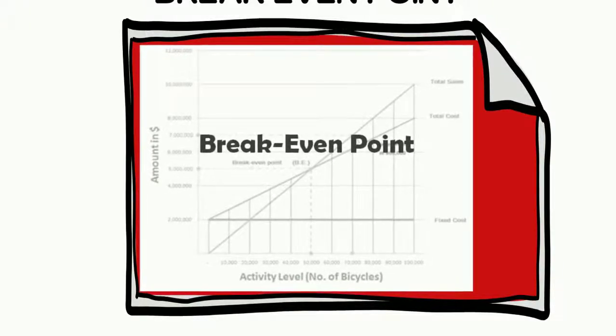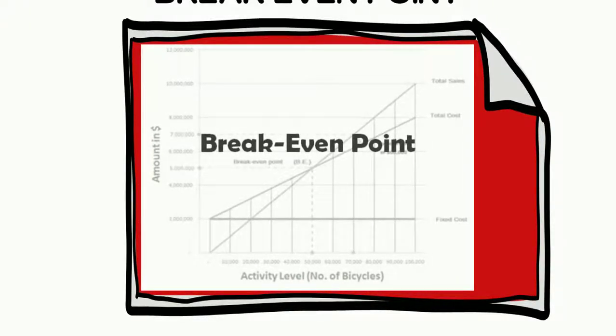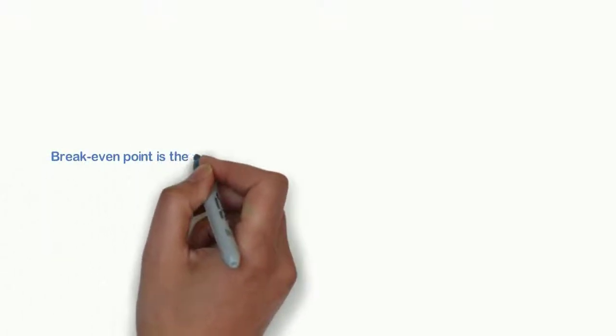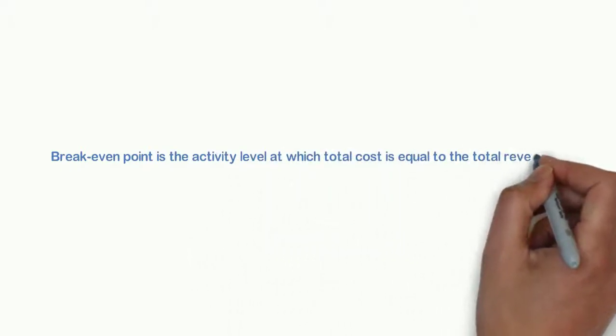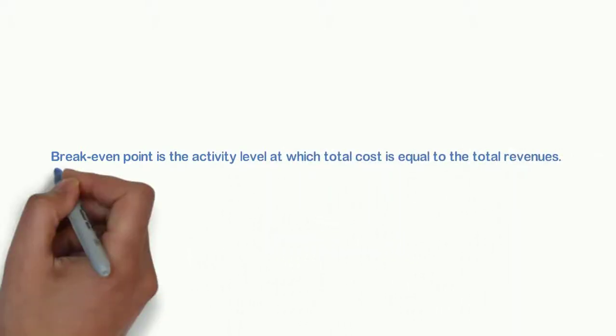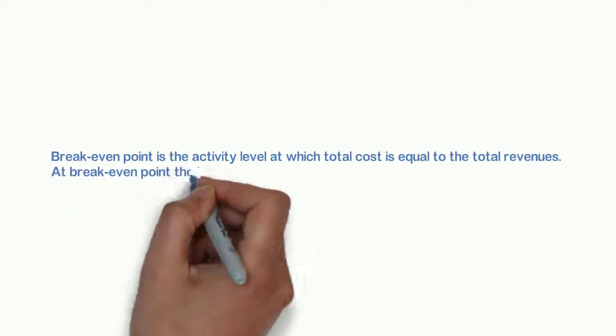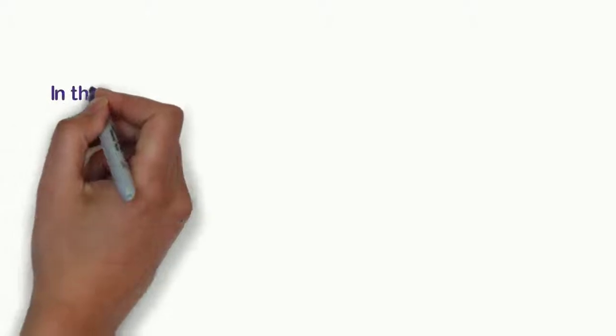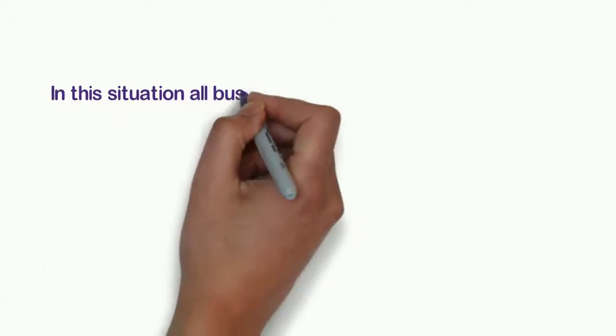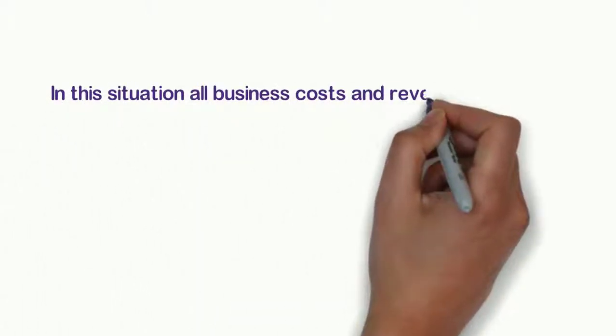First of all, let us know what is a breakeven point. Breakeven point is the activity level at which total cost is equal to the total revenue. At breakeven point the business makes no profit, no loss. In this situation all business costs and revenues are equal.